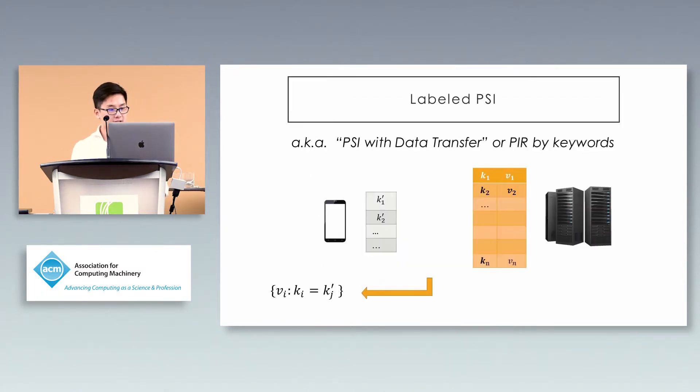Now let me introduce label PSI. Instead of being called PSI with data transfer, it's sometimes called PIR by keywords. PIR or private information retrieval is where the client holds an index in a database, the server holds the database, and the client retrieves the correct database element without the server knowing which element they're interested in.